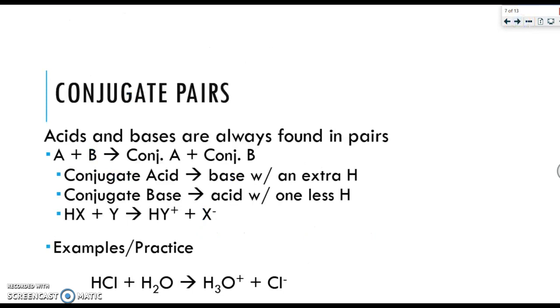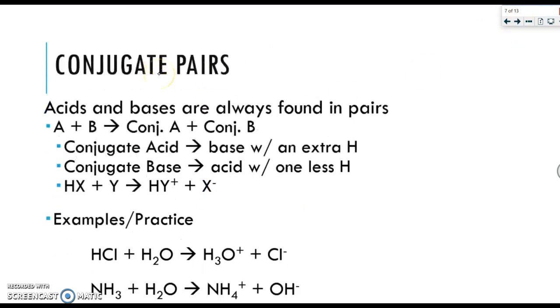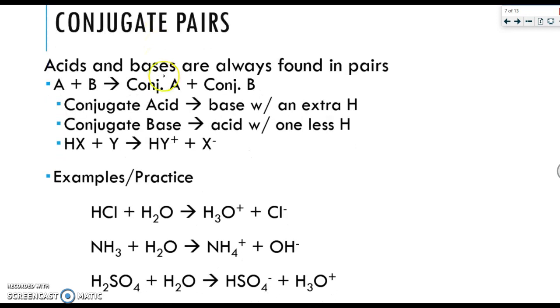Let's discuss something called conjugate pairs. Acids and bases are always found in pairs. You always have an acid plus a base making a conjugate acid and a conjugate base. The conjugate acid is the base plus an H, and the conjugate base is the acid minus an H. So here in this general formula, this would be your acid, this would be your conjugate base, this would be your base, and this would be your conjugate acid.